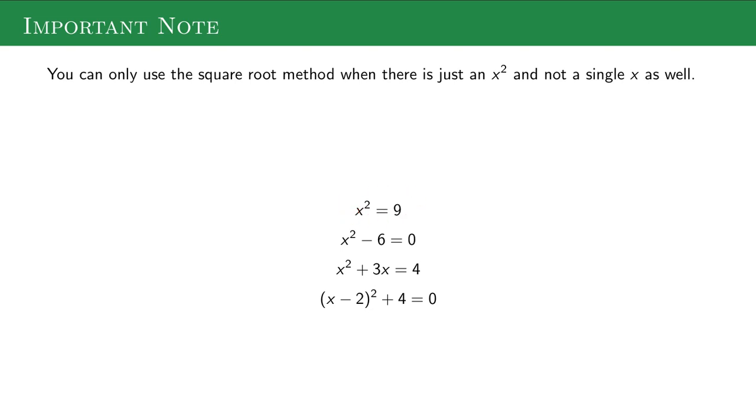Actually, this one you can, this one you can, this one you can't because there's this 3x here. This one you could the way it's written, but if you foil this out, then you couldn't. So if there's squares just applying to this x, there's no single x, then you can do the square root method. So this is the main one that you definitely cannot do it in because there's that 3x there.